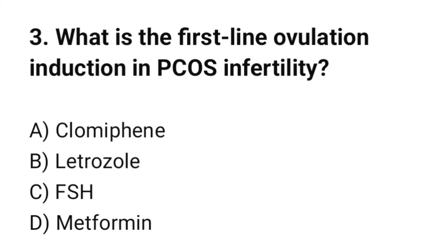Question number 3. What is the first-line ovulation induction in PCOS infertility? The correct option is B: Letrozole.